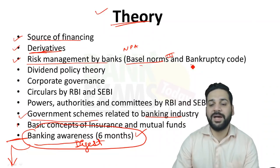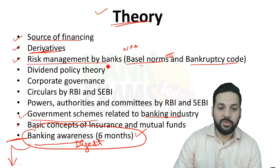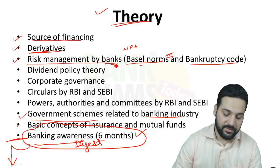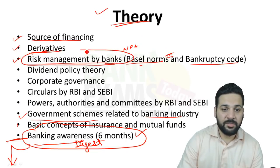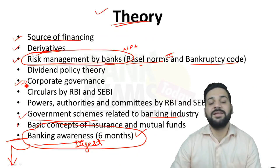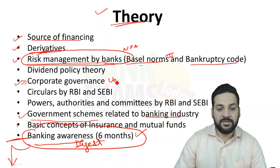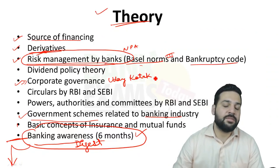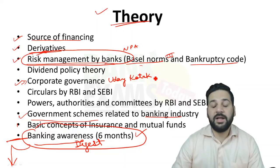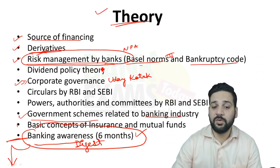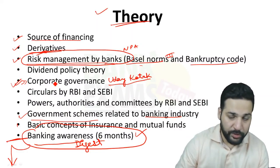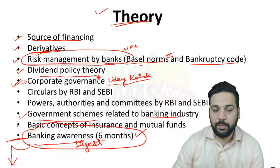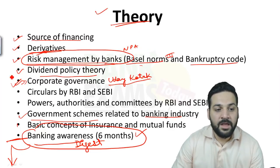For risk management, the important points are Basel norms — specifically Basel III norms, which are really important — NPAs, and the Bankruptcy Code, which is a hot topic right now and I'm expecting a lot of questions from it. For corporate governance, the Kotak Committee is important, as well as the Narayana Murthy Committee. Questions can come from the outcomes of these committees. Dividend policy theory is also very important — know the various policy theories.